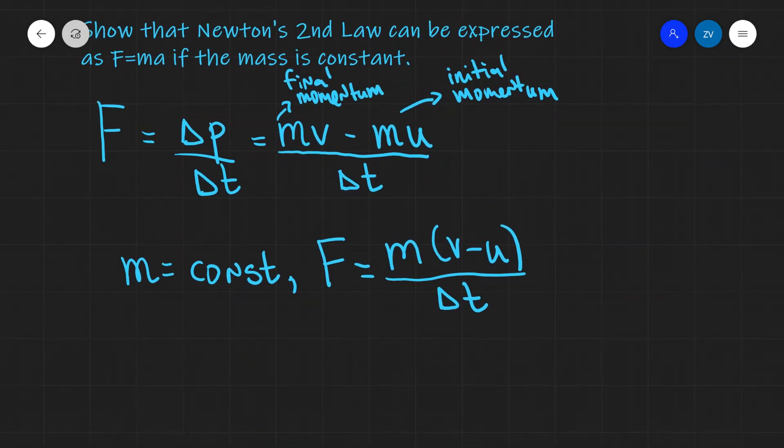This quantity over here that I'm just about to highlight is actually our acceleration, because that's the rate of change of velocity. Change of speed divided by change in time. So this means that the force is equal to ma, but only if the mass is constant.